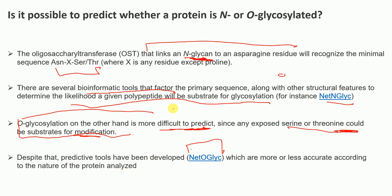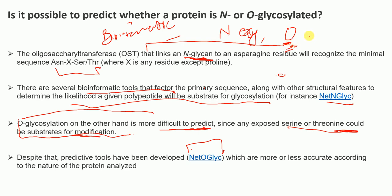In summary, bioinformatics tools are available to predict both N- and O-glycosylation. Prediction of N-glycosylation is comparatively easier, while prediction of O-glycosylation is more difficult due to the broader range of potential modification sites.